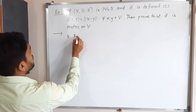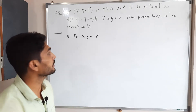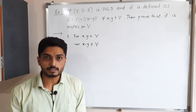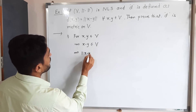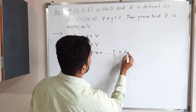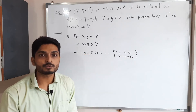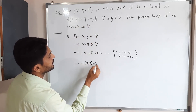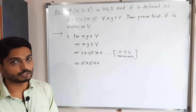What is the first condition of a metric? We take any arbitrary points x, y belonging to V. We have to prove D(x, y) is greater than or equal to zero. The subtraction x minus y is again a member of V, since V is a vector space. Because it is a norm on V, if you take any element of V inside it, it will always give a non-negative value. Therefore, D(x, y) is greater than or equal to zero, and the first condition is satisfied.